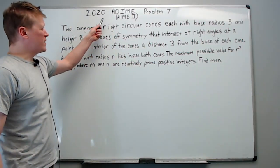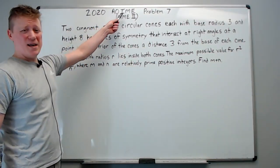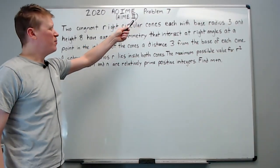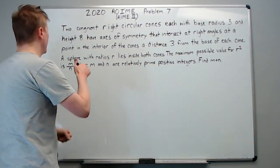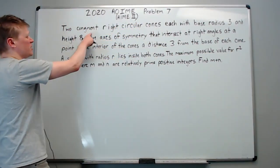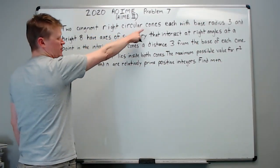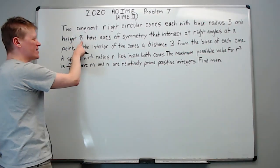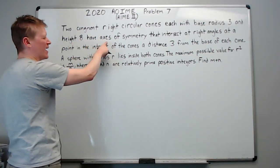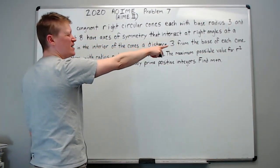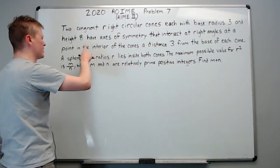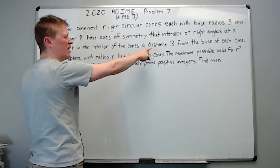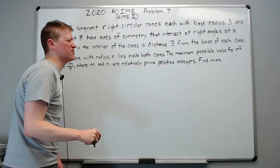This is the 2020 AOIME, also known as the AIME 2, Problem number seven. Two congruent right circular cones, each with base radius 3 and height 8, have axes of symmetry that intersect at right angles at a point in the interior of the cones, a distance 3 from the base of each cone.